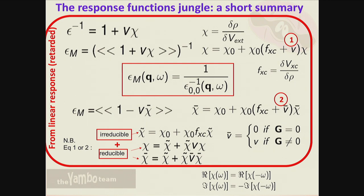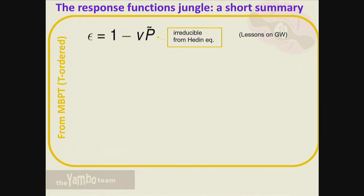In the Hedin equation we are speaking about irreducible quantities calculated diagrammatically. The goal is to find an equation for pi-tilde beyond the independent particle approach - we have only calculated pi-zero so far. We want to calculate the equation for pi-bar, because the goal is to calculate the macroscopic dielectric function. In the many-body approach, Andrea and Daniele used the definition of pi as the reducible polarizability; the two are clearly connected, and I call the irreducible polarizability pi-tilde.